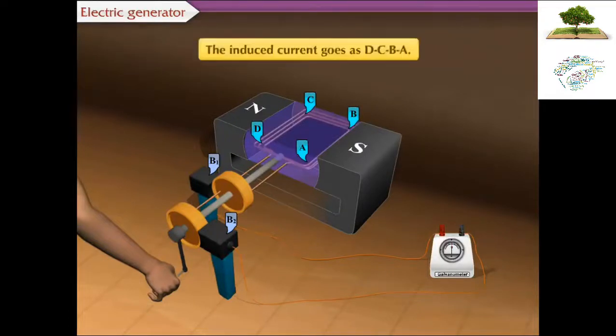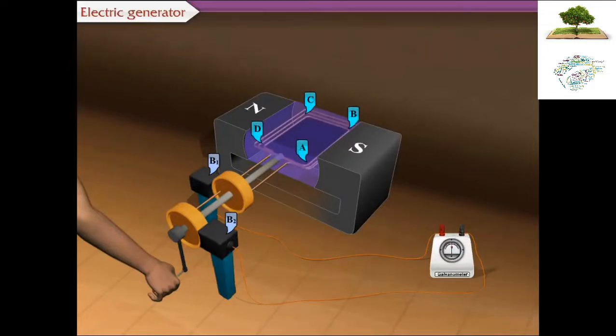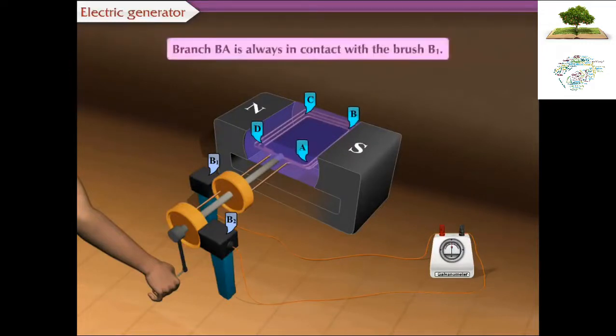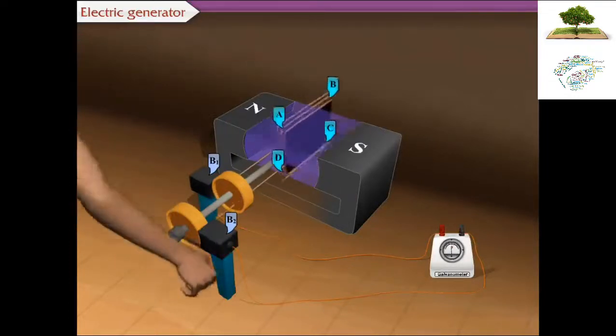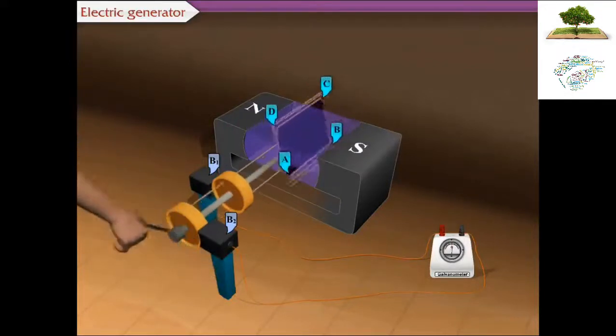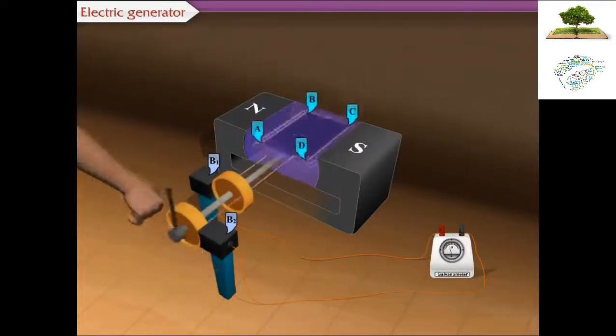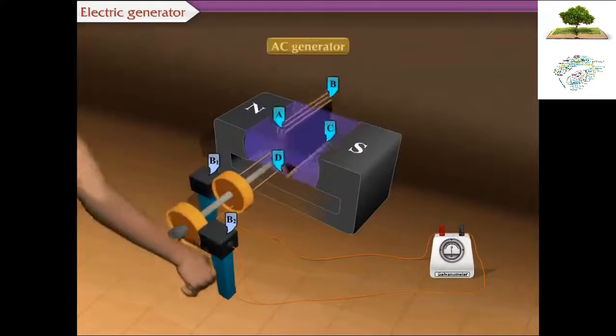Therefore, the induced current goes as DCBA. But the branch BA is always in contact with brush B1 and branch DC is in contact with brush B2. Hence, in the external circuit, current flows from B1 to B2 opposite to the previous half rotation. This repeats every half rotation and an alternating current is produced. This is what is called an AC generator.